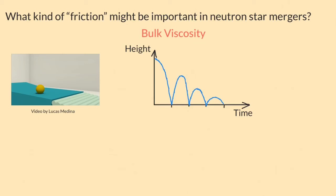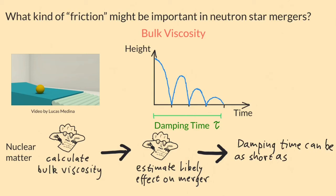The way this comes up in neutron star mergers is that density oscillations caused by the violent collision get damped out. The time it takes them to die away is called the damping time. So our group calculated the damping time for matter made of neutrons and protons, and we found it could be as short as 10 milliseconds. This means that even though the merger itself is very quick, lasting about 20 milliseconds, bulk viscosity is so strong that even in that short time it can damp out any density oscillations that are going on.